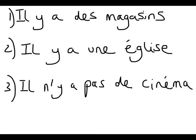Read these three sentences. Pause the video and try to see if you can translate them. Press play when you're ready to hear the answers. Number one: il y a des magasins — there are some shops. Number two: il y a une église — there is a church. Number three: il n'y a pas de cinéma — there is no cinema.